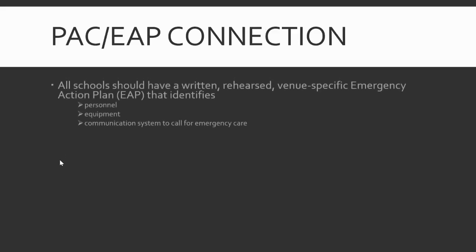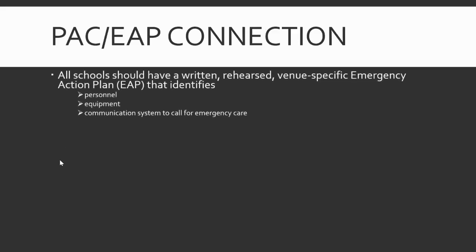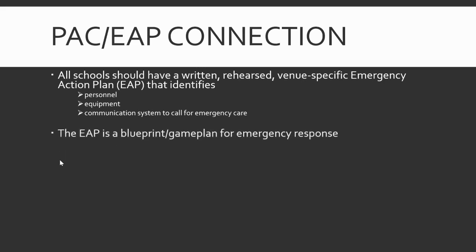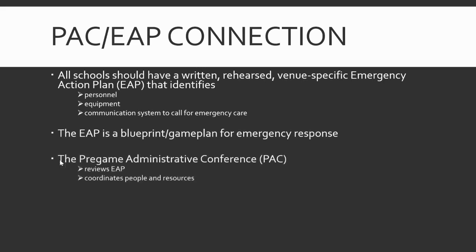The basis of the pregame administrative conference is the emergency action plan. All schools should have a written, rehearsed, venue-specific EAP that identifies people, equipment, and a communication system to promptly call for emergency care. The EAP is a blueprint, a game plan for an emergency response. A significant part of the PAC checklist is a review of the emergency action plan and coordination of people and resources.